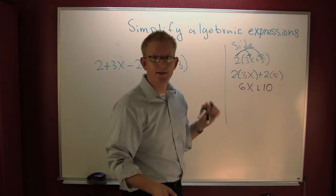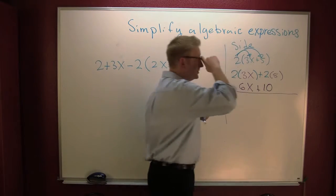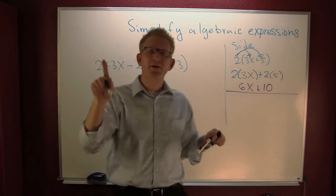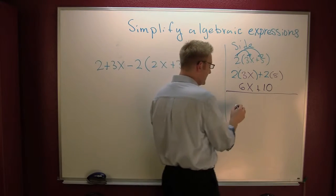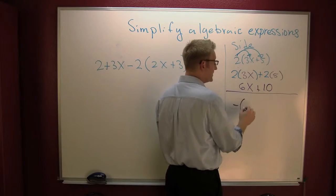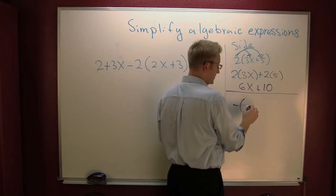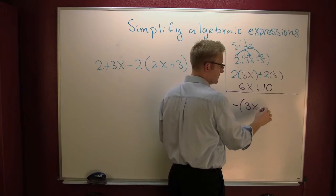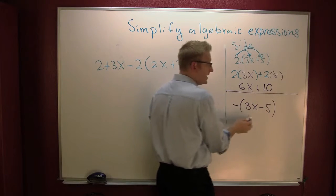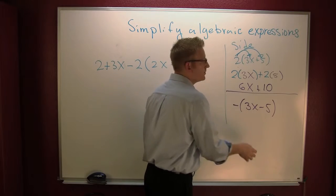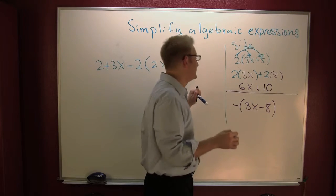2 times 3 gives you 6x, plus 2 times 5 gives you 10. Very nice. But what if they gave you a minus on the outside of (3x − 5)? Let's make it a different problem — make it 8.